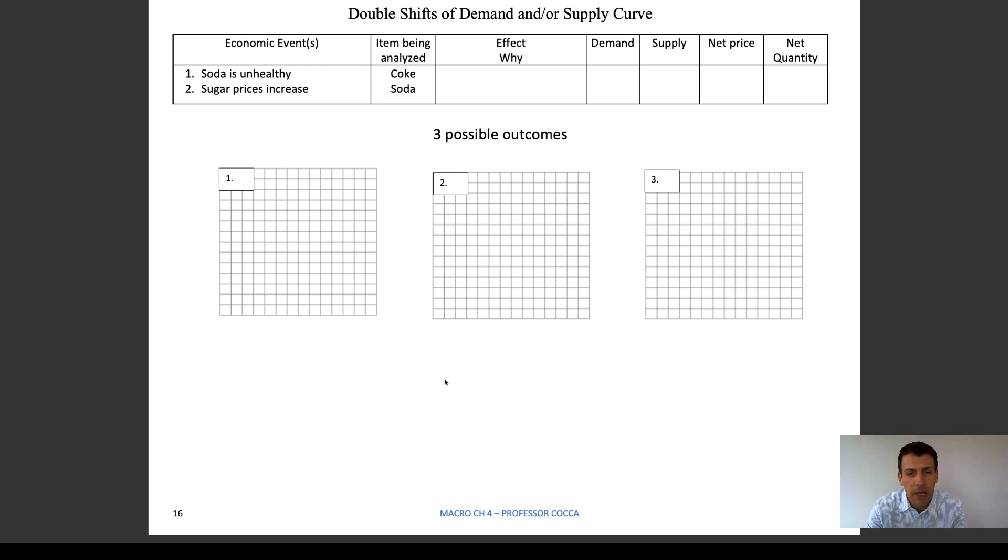On page 16, it's a double shift. You want to look at that table. Soda is unhealthy - think about whether that's demand or supply. Also, sugar prices are increasing.